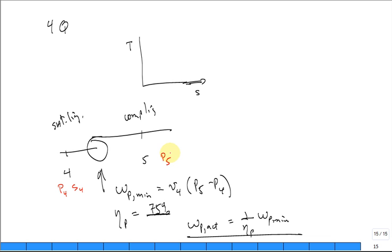and then just say S5 is equal to S4, and then look up and find H5, and then calculate the work of the pump is equal to H5 minus H4.